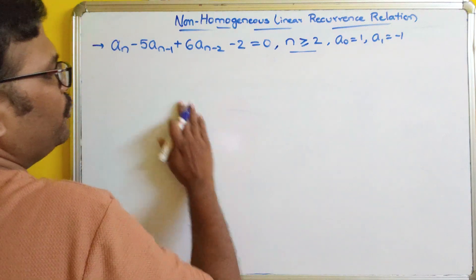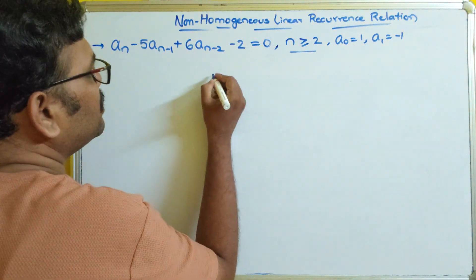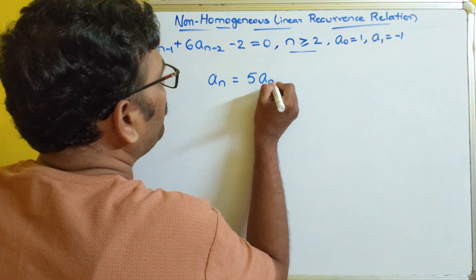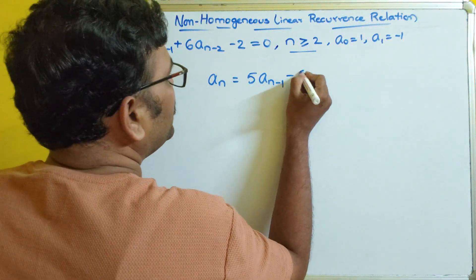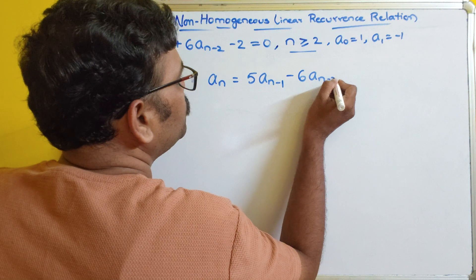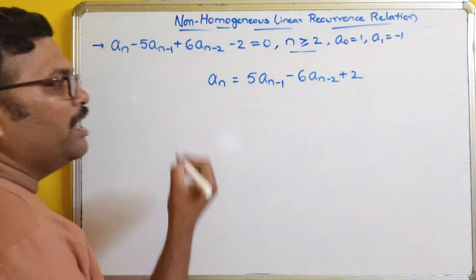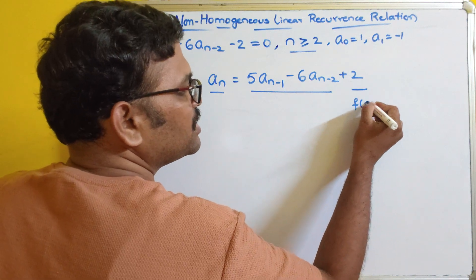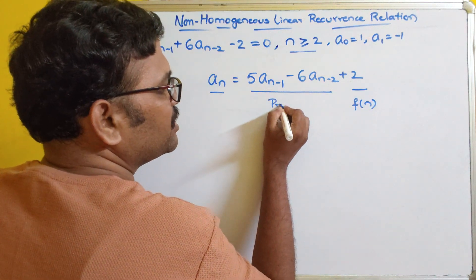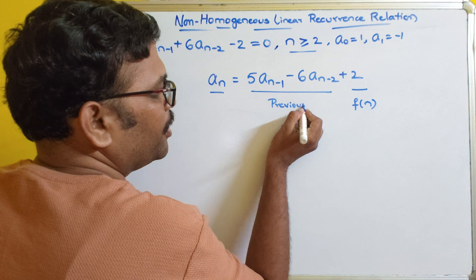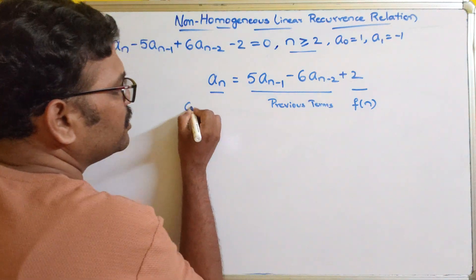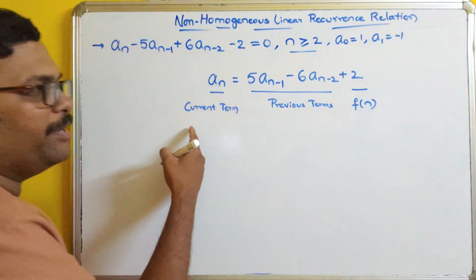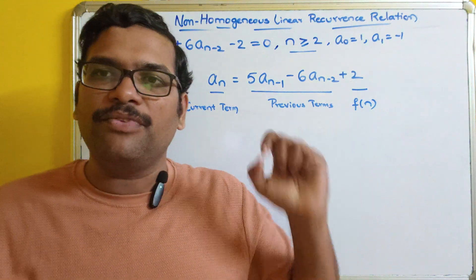Now what we have to do? This relation can be written as a_n = 5·a_(n-1) minus 6·a_(n-2) plus 2. You can see this is the current term, these are the previous terms, and the +2 is a function. So the current term depends upon the previous terms as well as some function.